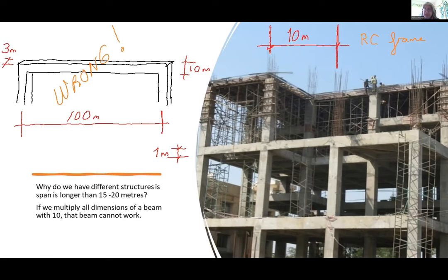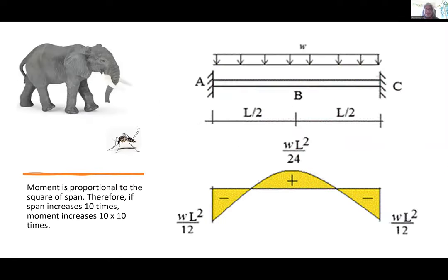After 15 or 20 meters of span, we start searching for other structural systems. The main reason is the problem I am going to explain: why is it not possible to multiply all dimensions with the same value? Here is the explanation — you can also see this in nature.